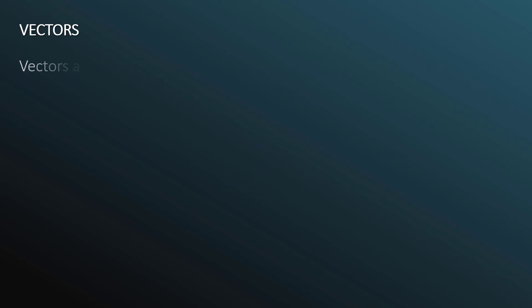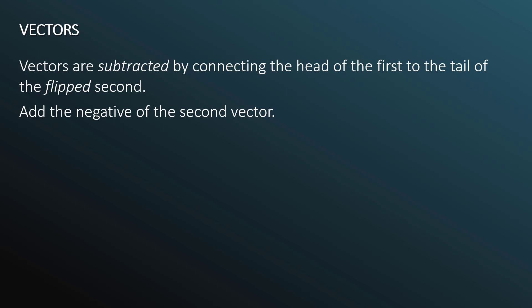What about subtraction? Vectors are subtracted by connecting the head of the first to the tail of the flipped second. Subtraction is essentially adding the negative. We're adding the negative of the second vector. Let's start again with v1, and we're going to subtract from it v2. But subtracting v2 is the same as adding the opposite. So we just flip the arrow. We have a negative v2. Once again, we connect the head of the first vector to the tail of this now flipped second. The pink arrow is the resultant vector, so v3 equals v1 minus v2.